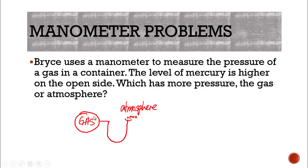Because our closed end, of course, has to be attached to the gas. So which has more pressure, the gas or the atmosphere, if the mercury is higher on the open side? So basically, without anything in here, without any pressure, these two would be equal. However, this has moved down and this has moved up.